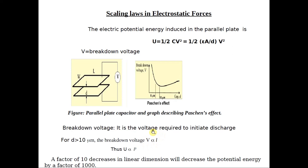Substituting: area A is proportional to L squared, distance D is proportional to L, and V is proportional to L so V squared is L squared. This gives L squared times L squared divided by L, which is L to the power of 4 over L, or L cubed — directly proportional to the cube of the length scale. So if the length scale is reduced by a factor of 10, the potential energy reduces by 10 cubed, or 1000.